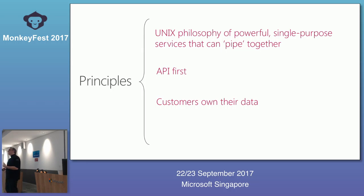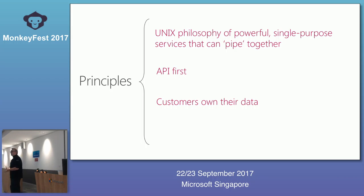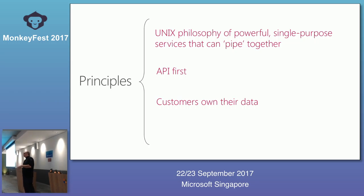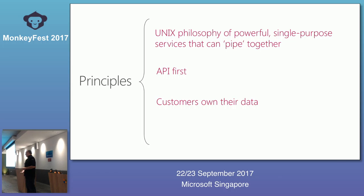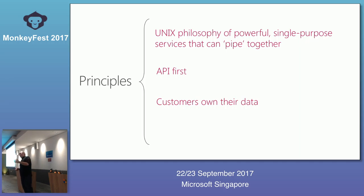Another thing that distinguishes us from competitors: you own your data. We collect a lot of information about your apps and your users' usage — test data, end users, installations, countries, crashes. You can pull out that data, run your own reports, put it into your own system. We're not taking that data and serving up ads from it. We're trying to make you more productive, and we don't want you to worry about who has your data or whether they'll use it to sell something. It's your data. You can always pull it out with the API.